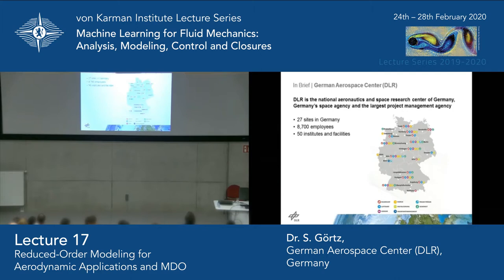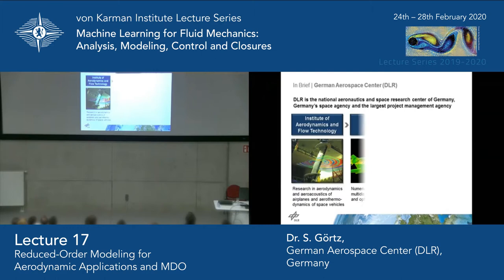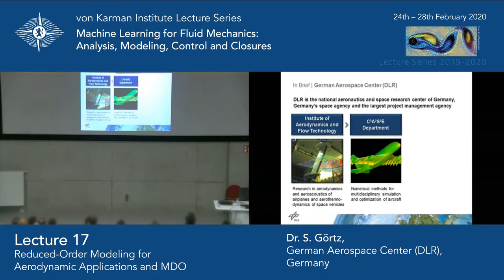We are also the largest project management agency in Germany, and we are the German Space Agency. Currently we have about 9,000 employees, and we're still growing, with about 50 institutes throughout Germany. I'm from the Institute of Aerodynamics and Flow Technology, where I'm the department head for the C²A²S²E Center — Center for Computer Application in Aerospace Science and Engineering — where we develop numerical methods and apply them to different challenging aerospace problems, including aero-acoustics and aerodynamics.